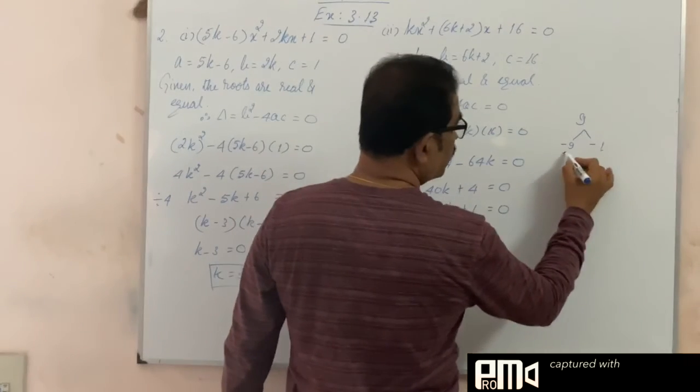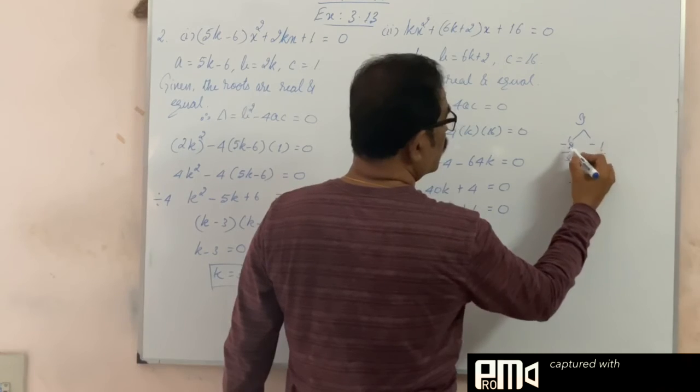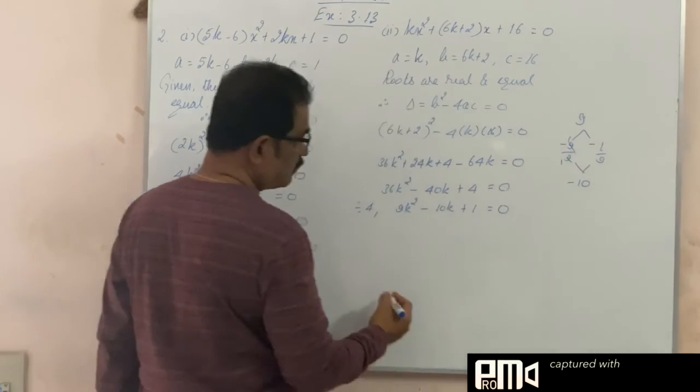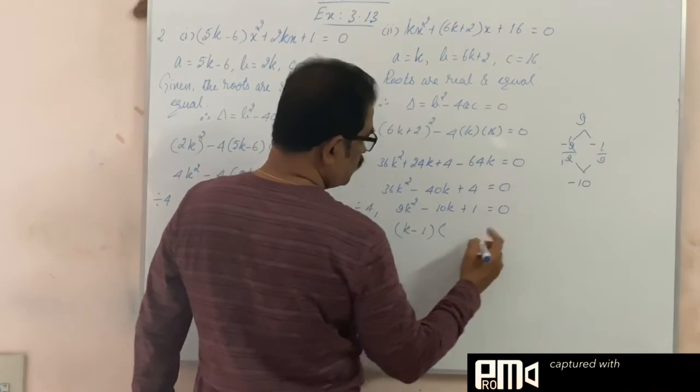Here, a coefficient of 9 is there, so I divide by 9. Here, I get 1 by 1. So, this becomes k minus 1, 9k minus 1.